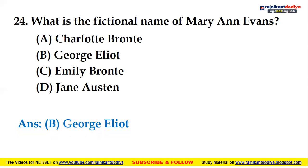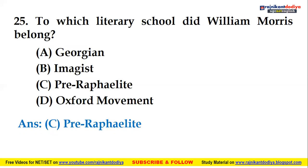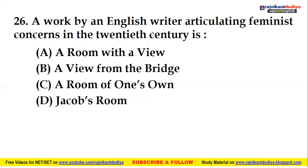Next: to which literary school did William Morris belong? Options are Georgian, Imagist, Pre-Raphaelite, or Oxford Movement. The right answer is Pre-Raphaelite — William Morris belonged to the Pre-Raphaelite literary school.